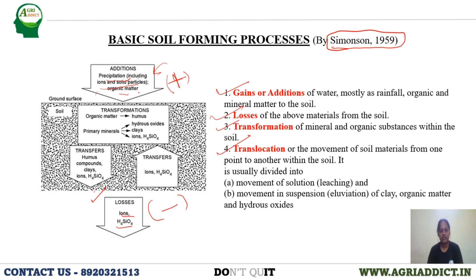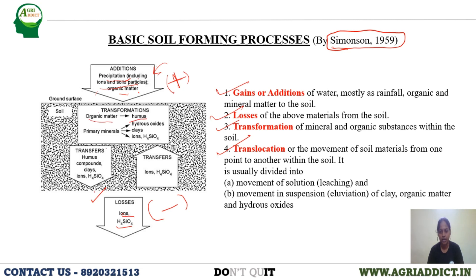Next is transformation. Transformation means one form of a substance is transformed into another form. In the last class we saw vegetation impacting the humification process — that means organic matter is transformed into humus. Likewise, minerals will also undergo transformations.